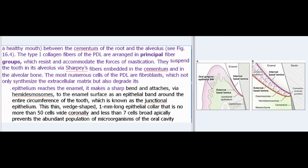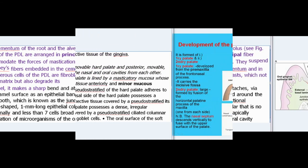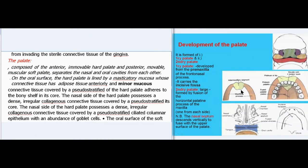When the epithelium reaches the enamel, it makes a sharp bend and attaches via hemidesmosomes to the enamel surface as an epithelial band around the entire circumference of the tooth — known as the junctional epithelium. This thin wedge-shaped, 1 mm long epithelial collar, no more than 50 cells wide coronally and less than seven cells broad apically, prevents the abundant population of microorganisms of the oral cavity from invading the sterile connective tissue of the gingiva.